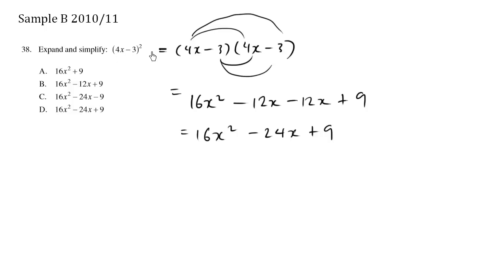Another way to do it more quickly is to say I have something squared, so 4x times 4x is 16x squared. I'm going to go this times this,